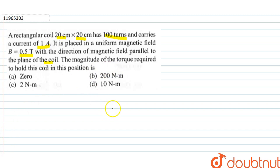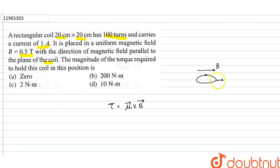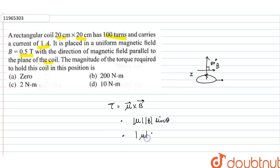As we know, torque is equal to magnetic moment cross B-vector — that is the magnetic field. In this question, the magnetic field is parallel to the plane of the coil, so the angle between the magnetic moment and B is 90 degrees. Therefore, torque equals |μ||B| sin θ, and since θ = 90°, sin θ = 1, so torque equals μB.